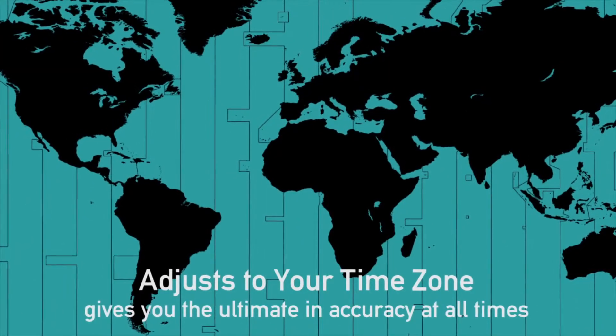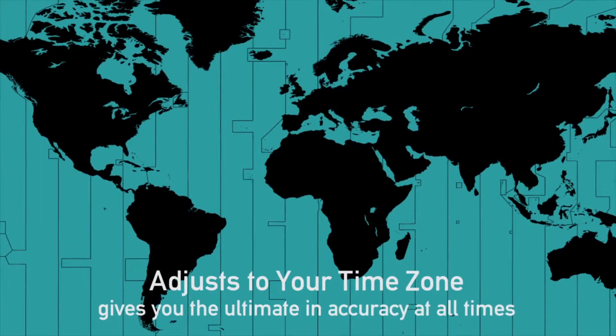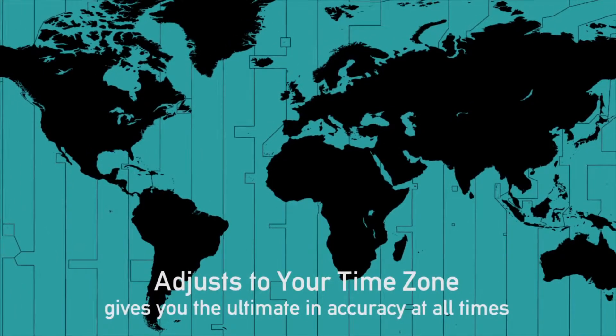And ASTRON is fast. In normal conditions, it shows the correct time in a new time zone in as little as 30 seconds.